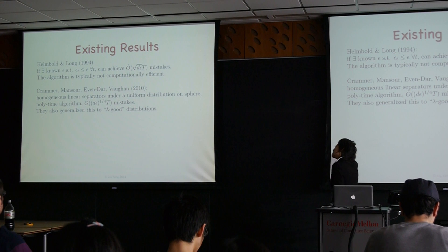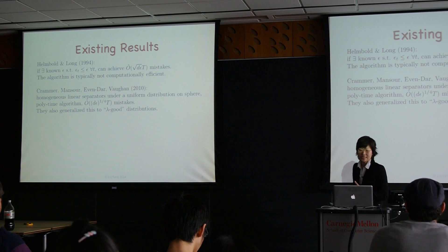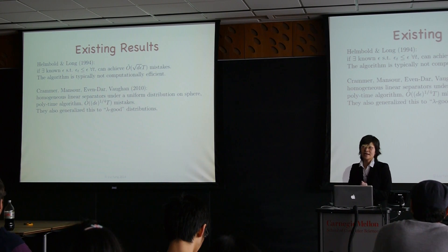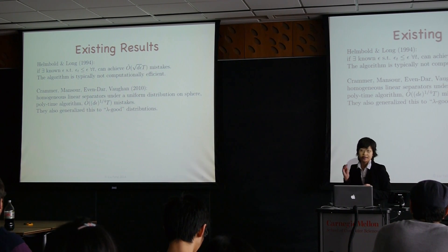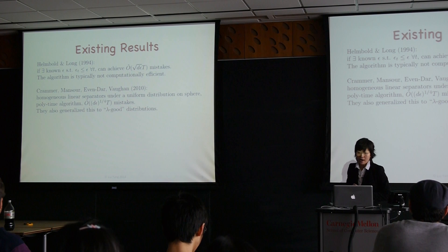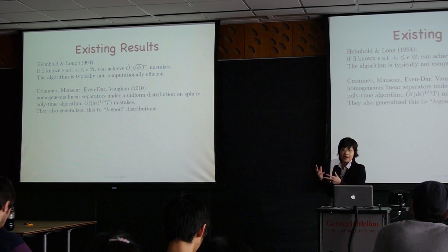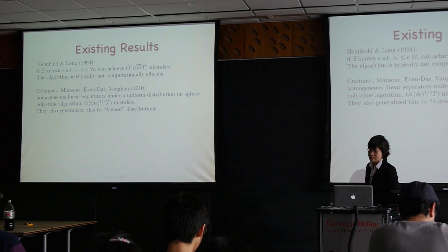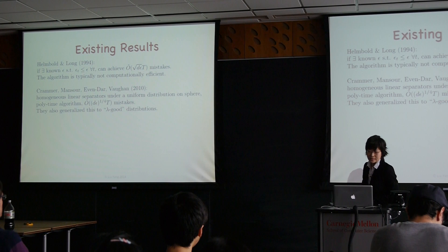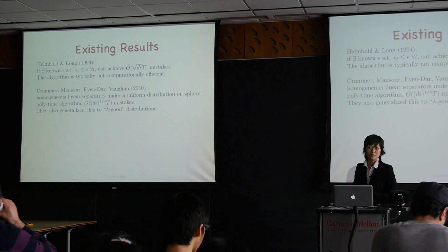There is some prior work in this setting. Specifically, if we suppose all the epsilon_t values are bounded by a known constant epsilon, a paper by Humboldt and Lange in 1994 shows it is possible to achieve order square root of d·epsilon·T mistakes among the first T examples. The algorithm uses empirical risk minimization techniques and is typically not computationally efficient.